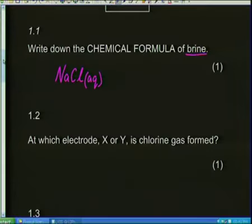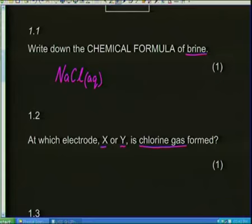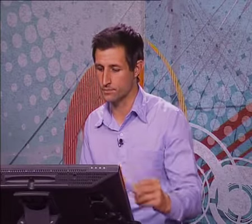Moving on. It says: at which electrode — X or Y — is chlorine gas formed? We know the diagram has a few gases coming out at the top, so let's find X and Y. I've got electrodes X and electrode Y, and I need to figure out which electrode these gases are going to.